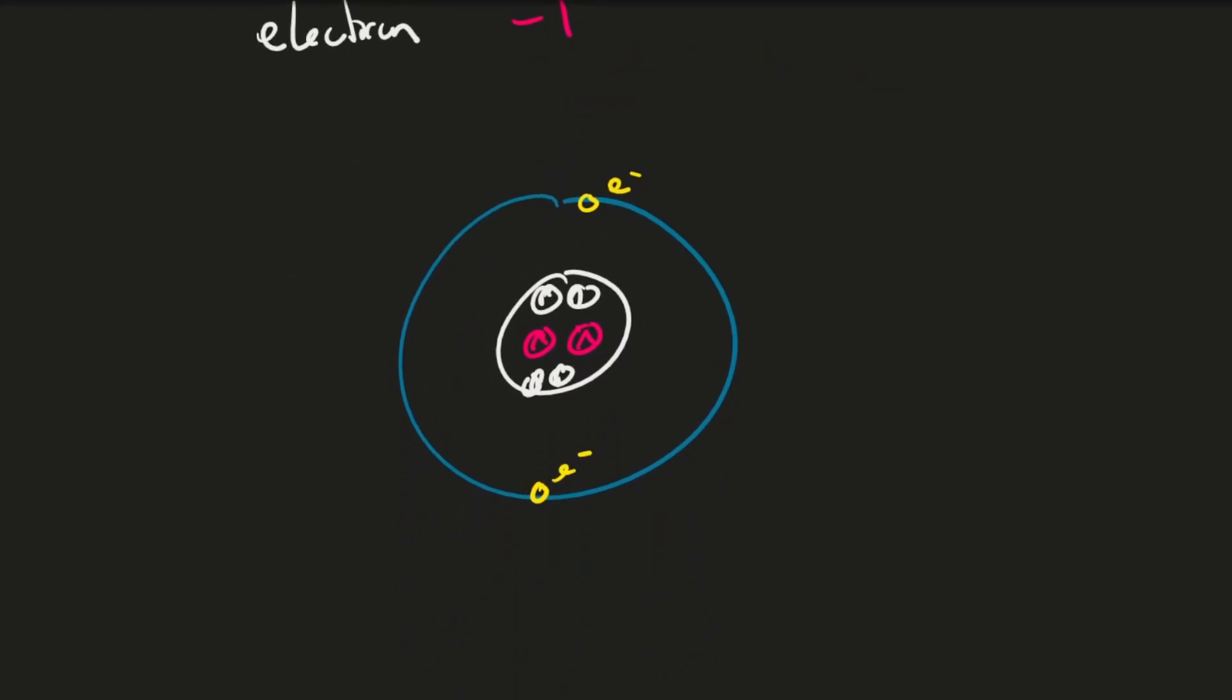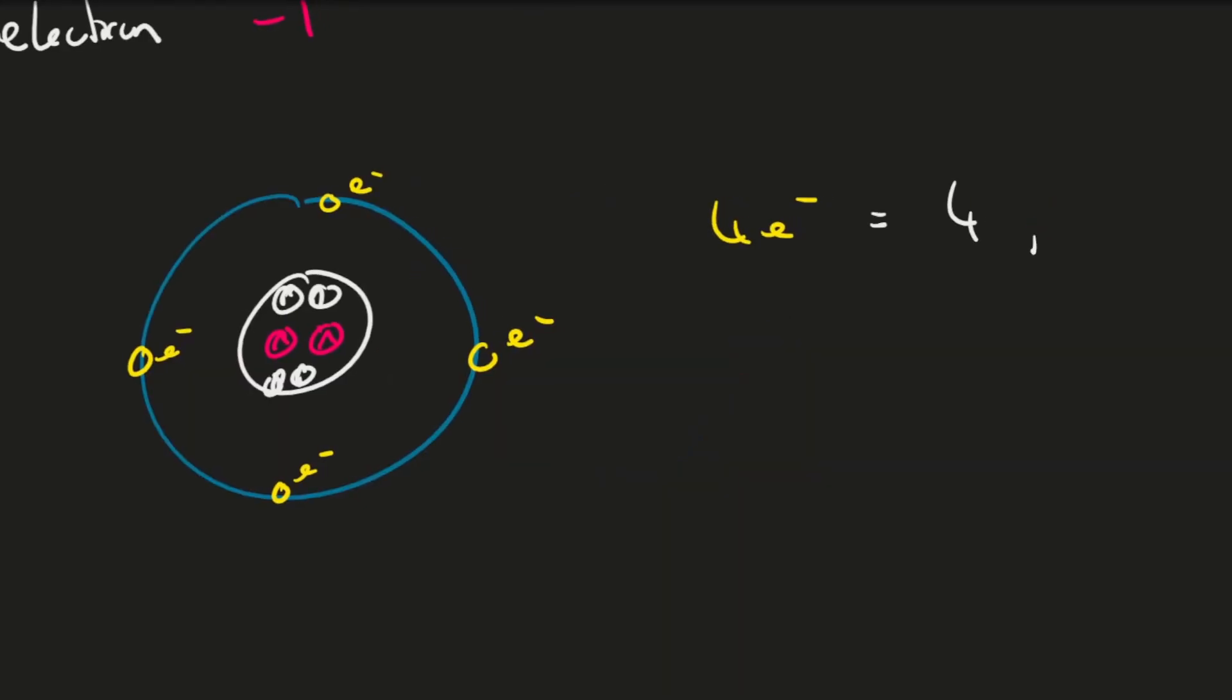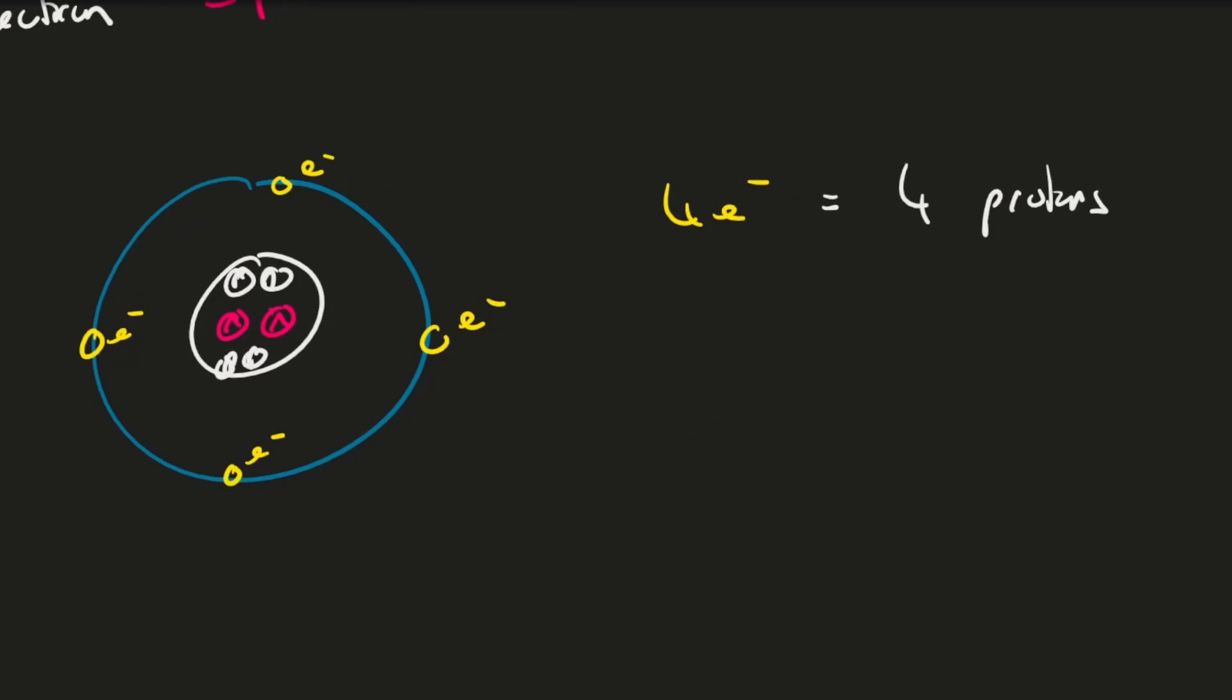Generally, the number of protons equals the number of electrons. So here we'd have four electrons that equal four protons. This is important because the proton and electron have equal and opposite charges, so overall the atom has no charge—the atom is neutral.